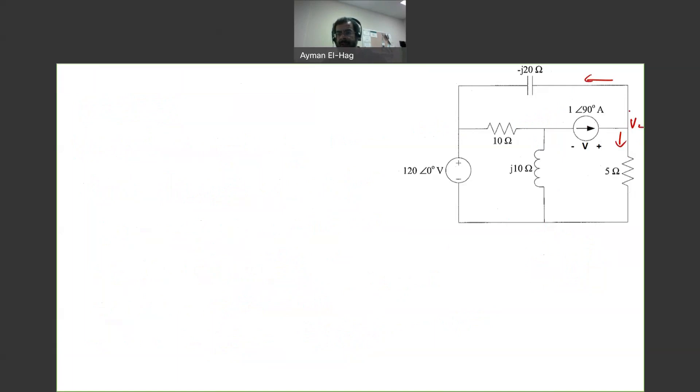The current that goes in the upper branch is equal to V2 minus 120 angle of 0, divided by minus J20, plus the current that goes down, V2 divided by 5, and this is equal to 1 angle of 90.